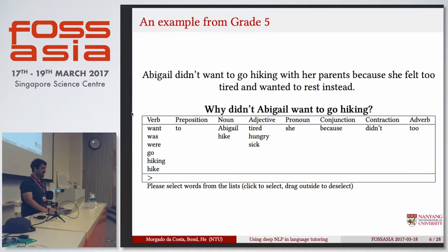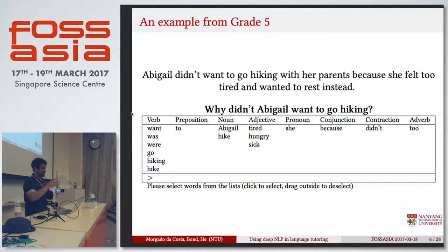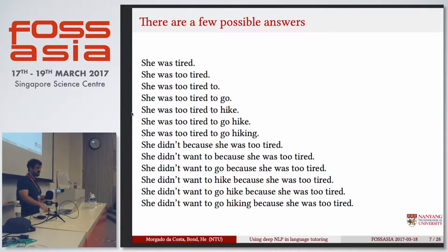So, this is an example. Abigail didn't want to go hiking with her parents because she felt too tired and wanted to rest instead. Question to the student — this is a fifth grade example — why didn't Abigail want to go hiking? So when you have a whole bunch of words that they can click and drag, given these words that have been selected to answer this question, what can students answer to be a correct answer? Well, there are a few possibilities — she was tired, she was too tired, she was too tired to go hiking, or she didn't want to go hiking because she was too tired.